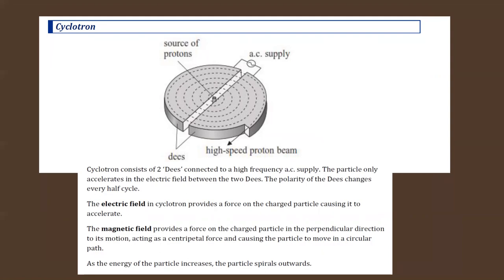To accelerate protons, we have a source of protons. The two D-shaped electrodes - called dees - are connected to a high-frequency AC supply. When a particle comes out, one dee is positive and the other is negative, so the proton is accelerated. Inside the dee there is no change in speed because there is no electric field within the dee - there is only a magnetic field between the dees which changes the direction.